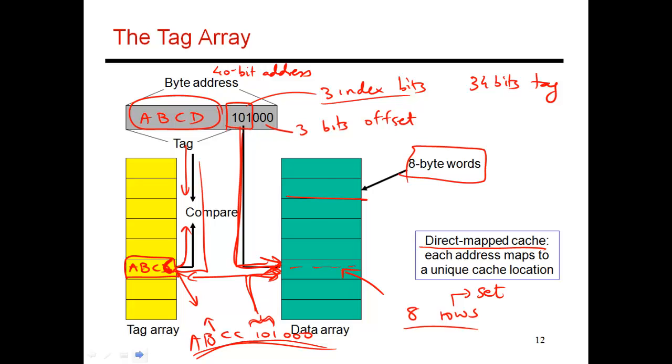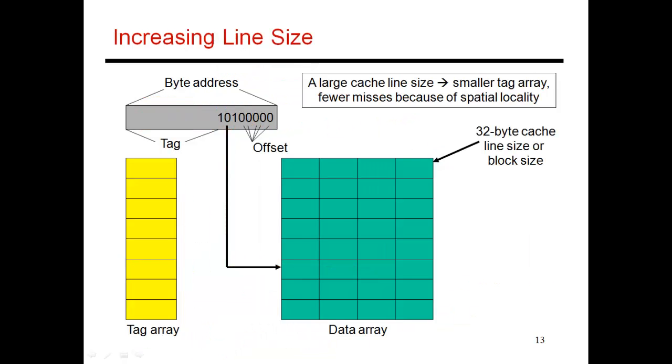Now, let me expand on the structure a little bit more. I'm not happy with just storing eight-byte words because I know that programs exhibit spatial locality. So if I'm touching element x, I'm expected to touch x plus 1, x plus 2, and so on in the near future. So when I bring stuff into my cache, it doesn't make sense to just bring in eight bytes. What I want to do is bring in more data, say 32 bytes or 64 bytes.